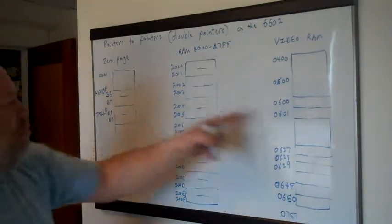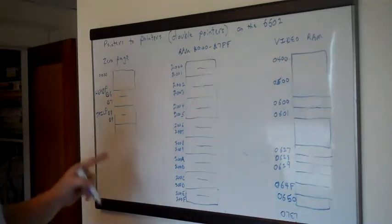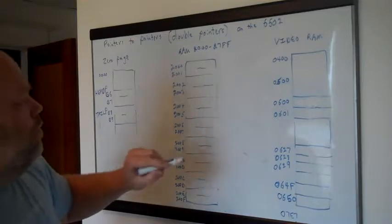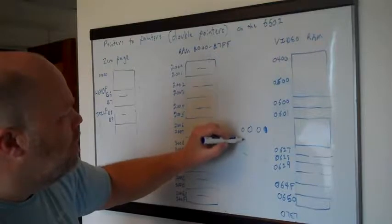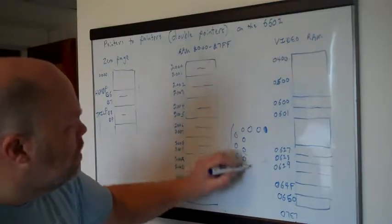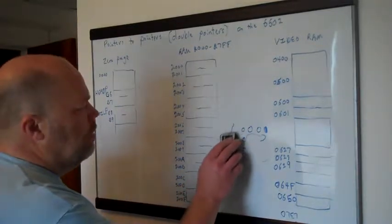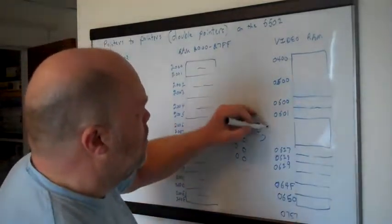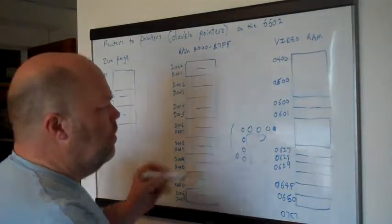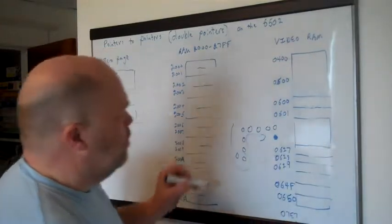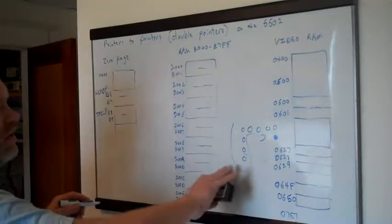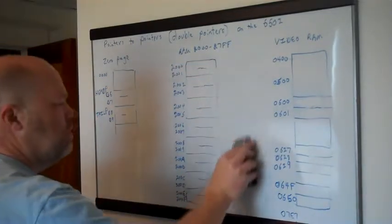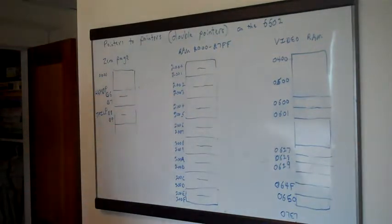That probably seems unnecessarily complicated — why not just have head P point to the head and tail P point to the tail? The problem is, when your worm goes along and winds around, when the tail character disappears you've got to know which is the next tail character. Because as the worm moves, you've got to be able to get rid of the right tail character each time. You've got to be keeping track of all positions in order from head to tail, and that's what this list of pointers is for.